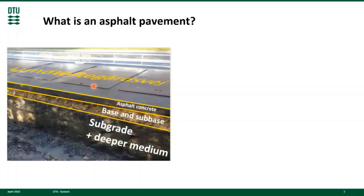What is an asphalt pavement? The official definition of a pavement is a layered system made of geomaterials that is designed and built to serve as a physical transportation infrastructure. Asphalt pavements are the most common pavement type. From top to bottom, they are composed of asphalt concrete, unbound base and subbase, subgrade, and deeper medium of soil mass or rock mass.